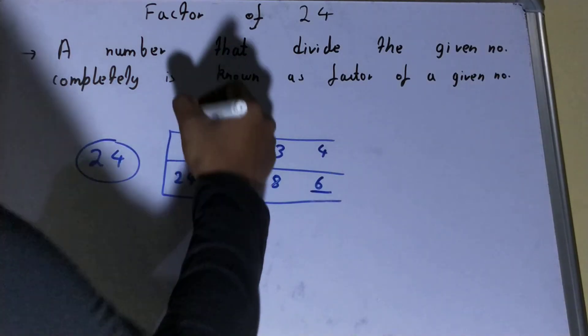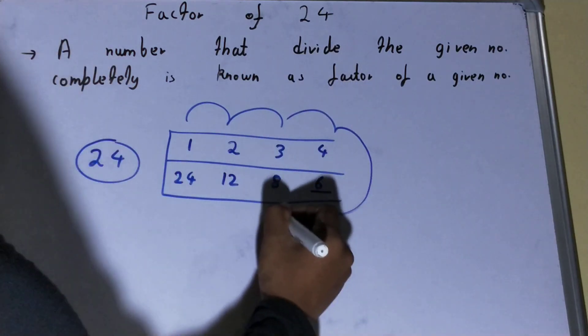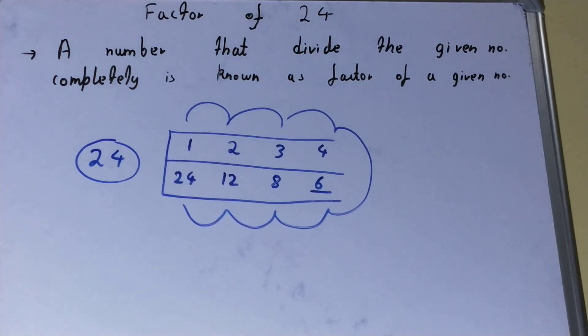Whatever numbers we are having—1, 2, 3, 4, 6, 8, 12, and 24—will be the factors of 24. So this is how you can find out all the factors of 24. If you found the video helpful, please hit the like button, consider subscribing, and thanks for watching.